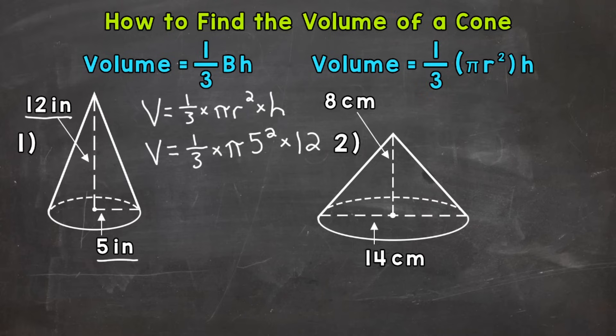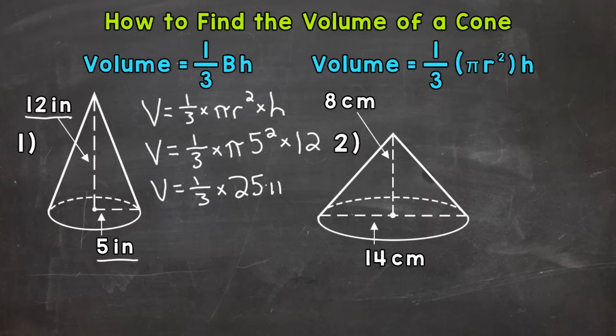So we can plug that into a calculator. I'm going to break it down and simplify it a little further though, until we get it in terms of pi, which means a number times pi. Then I'll calculate. So the first thing that we need to do is 5 squared. So volume equals 1/3 times — well, 5 squared means 5 times 5 — that gives us 25 times pi, so 25π times 12. Now I put the 25 in front of the pi symbol because we simplified the area of the base and now we have it in terms of pi. Typically speaking, you'll put a number in front of pi when multiplying a number by pi.